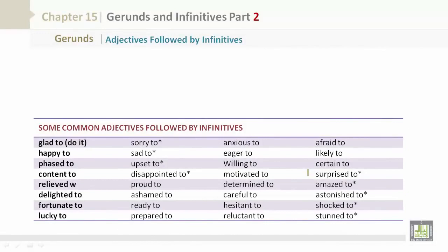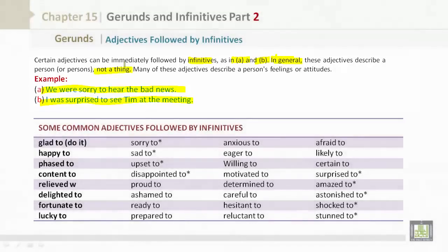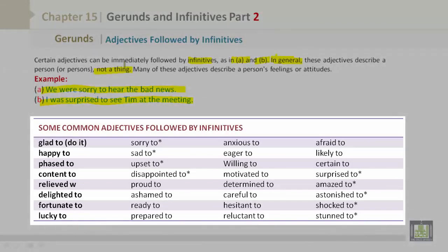Adjectives followed by infinitives: certain adjectives can be immediately followed by infinitives. Examples: 'We were sorry to hear the bad news.' 'I was surprised to see Tim at the meeting.' In general, these adjectives describe a person, not a thing, and many describe a person's feelings or attitudes. Common adjectives followed by infinitives include: glad, happy, pleased, content, relieved, delighted, fortunate, and lucky.